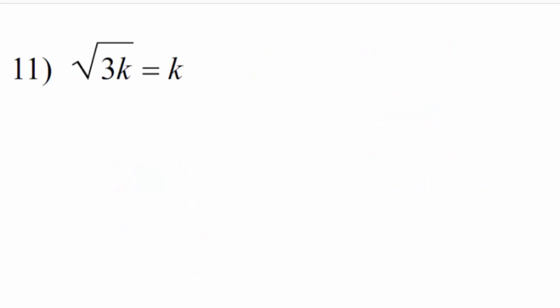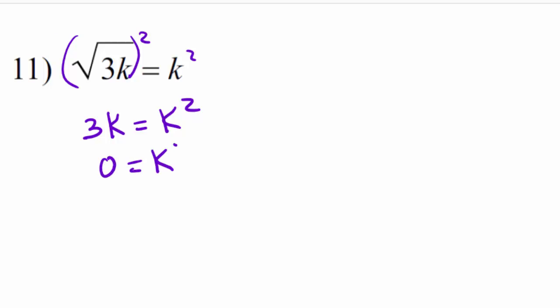Here's where it gets a little different. We have a variable on both sides, and one variable is outside the radical, creating the potential for a quadratic — meaning we could end up with two solutions. The square root is already isolated, so we raise both sides to the second power and end up with 3k equals k squared. To solve a quadratic, we force the whole thing to equal zero by subtracting 3k from both sides, giving k squared minus 3k equals zero.